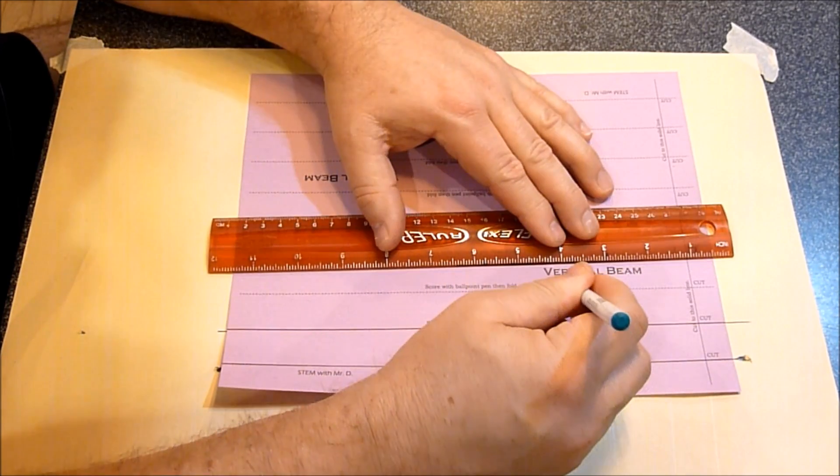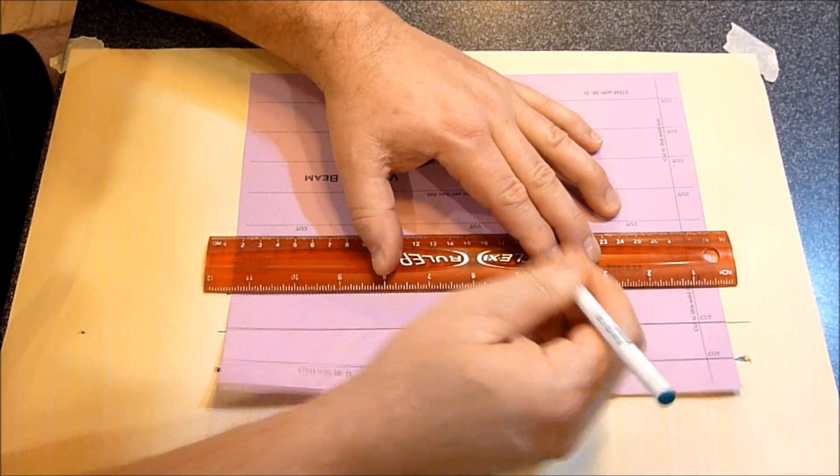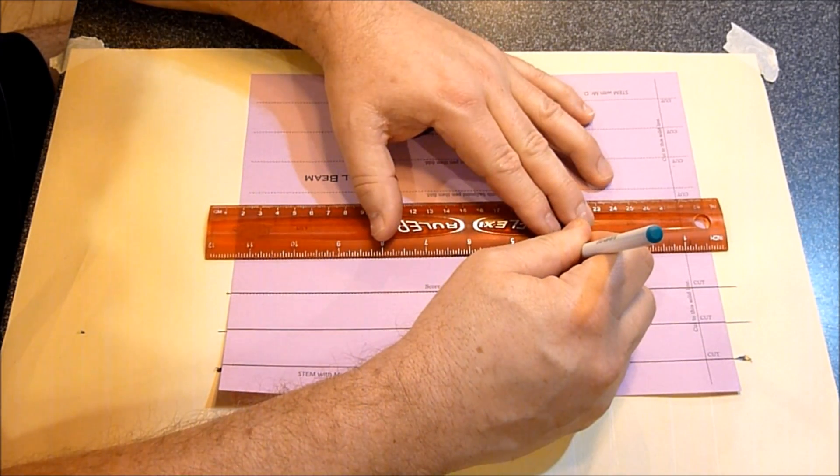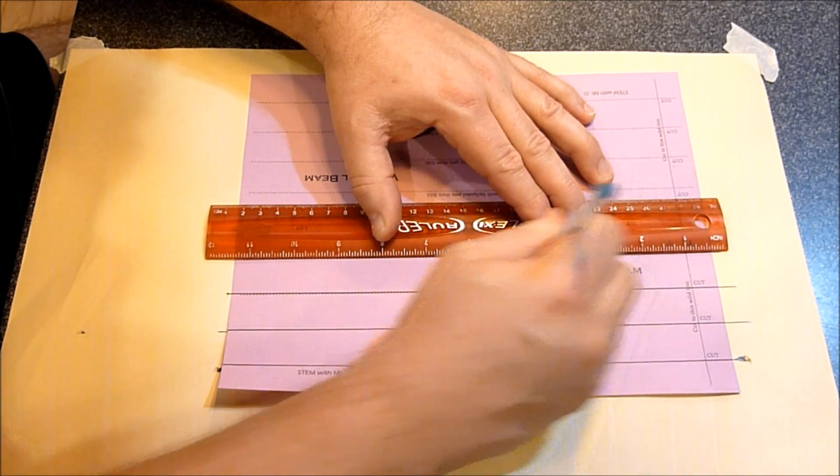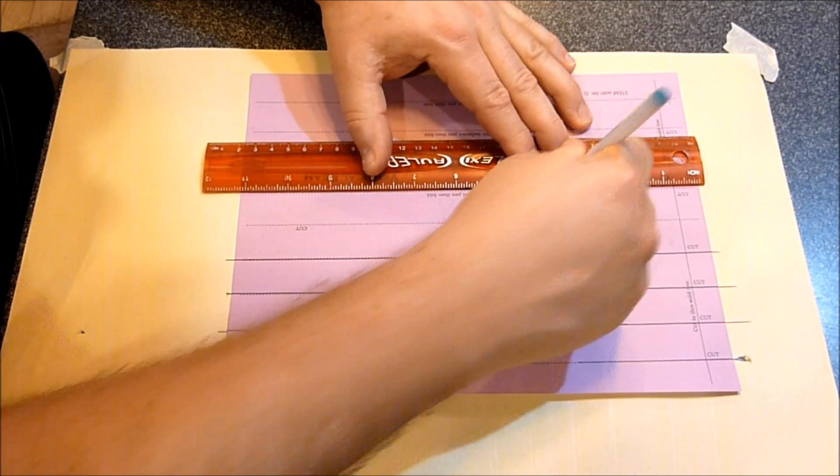Just one, two. Make sure you're pushing down pretty firmly and make sure you're using a ballpoint pen. That makes it so that when you fold your beam, you get a really straight line.